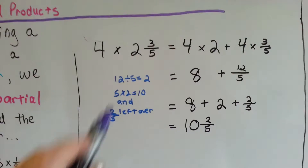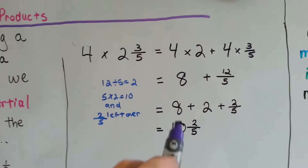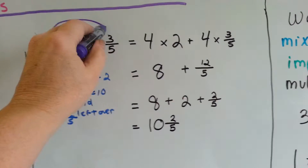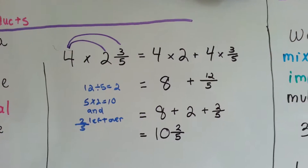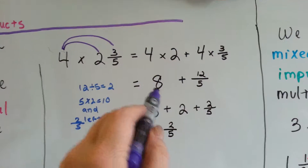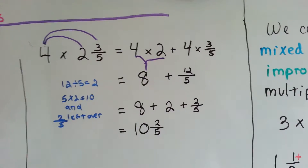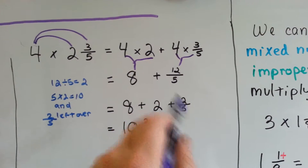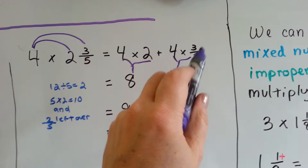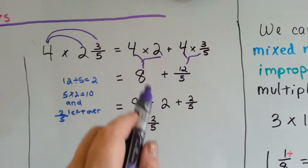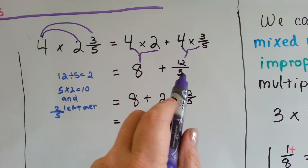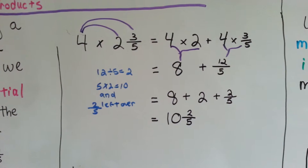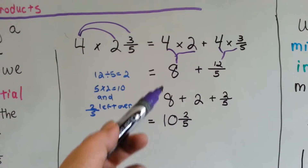Now let's try: 4 times 2 and 3 fifths. We break it up into 4 times 2 and 4 times 3 fifths — like the distributive property. 4 times 2 is 8. Then 4 times 3 fifths: 4 times 3 is 12, put it over 5, giving 12 fifths. Now we have 8 plus 12 fifths, but that 12 fifths needs to be simplified because it's an improper fraction. We can't leave the answer as 8 and 12 fifths.